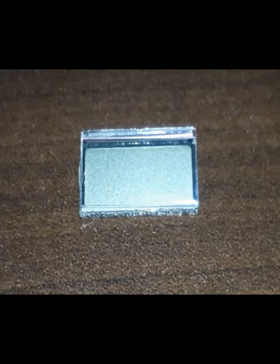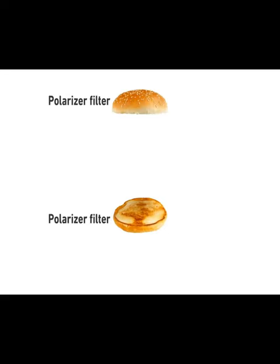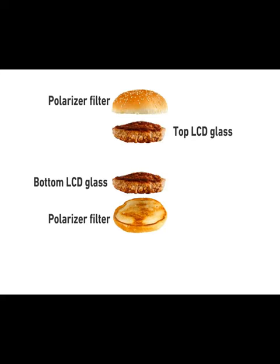The LCD consists of layers that look like a sandwich. Two polarizer filters allow light to pass through them on a condition. Two layers of glass are coated with a transparent conductive material on the inner surfaces, which act as the cathode and anode of the display.